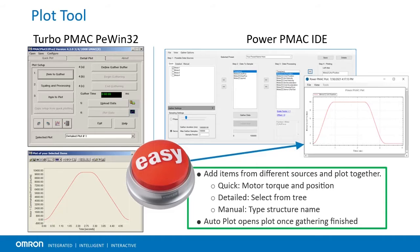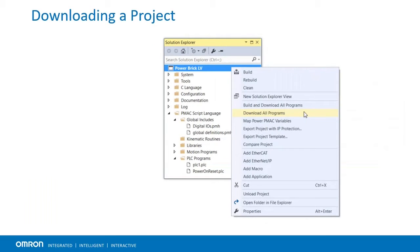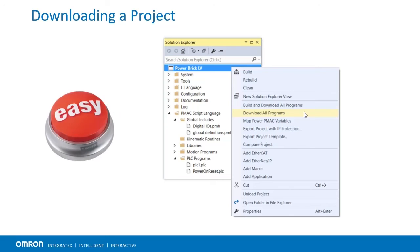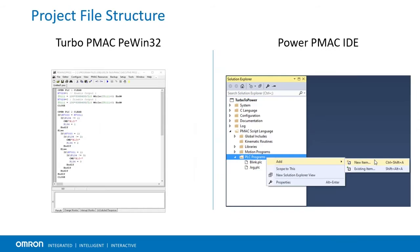Variables can be added to data to sample from a mix of sources including motor positions, a tree of PMAC variables, and manual entry. In PE Win32, different files in the editor window were typically downloaded one at a time. In the Power PMAC IDE, setup for your entire system is contained within a project which is all downloaded at once. On the first download of a project, the Build and Download All Programs option must be used. In PE Win32, the entire configuration was typically found in a single file. In the Power PMAC IDE, the project is organized so that various files such as PLCs and Motion Programs reside under corresponding folders. We will be creating a new file for each program.